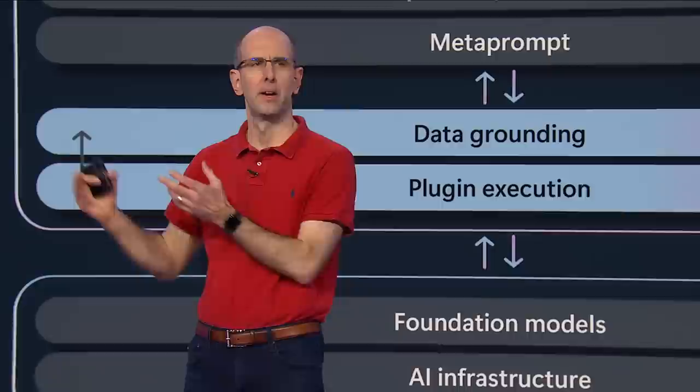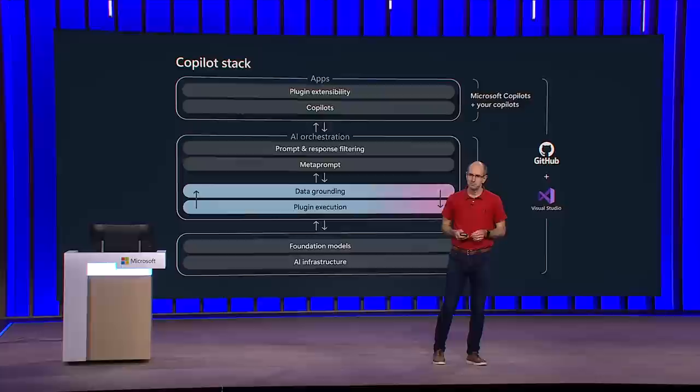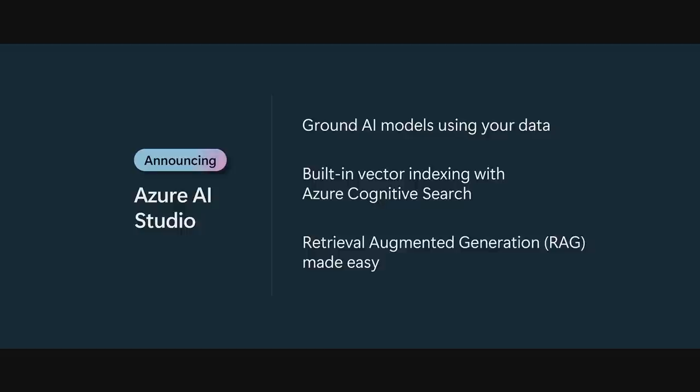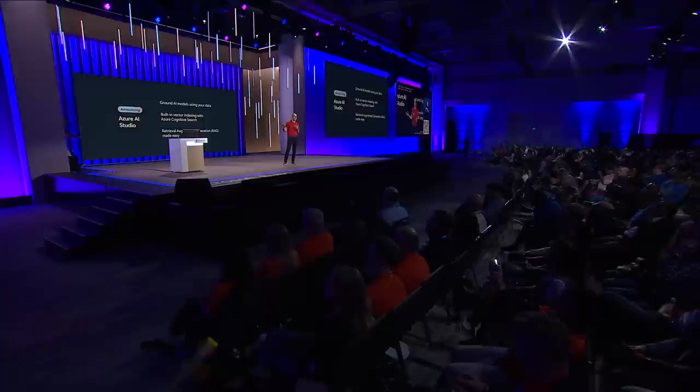These are companies already using the Azure OpenAI Service — in some cases built in weeks. This week at Build we're introducing our new Azure AI Studio, which makes it incredibly easy to ground your AI models with your own data and build retrieval augmented generation — RAG-based solutions. This enables you to build your own Copilot experiences specific to your apps and organizations. Please welcome Seth Juarez on stage to show us how.